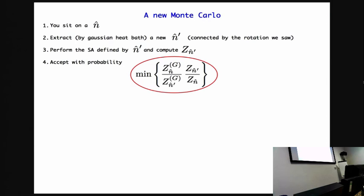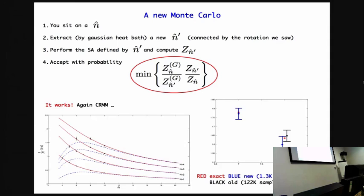You compute this Z_n, the complete Z_n prime, and then you are accepted or rejected by Metropolis. So you are simply playing around with a Metropolis in which the proposal is not flat but is dictated by the solution of the Gaussian problem. It works, at least for a random matrix model.